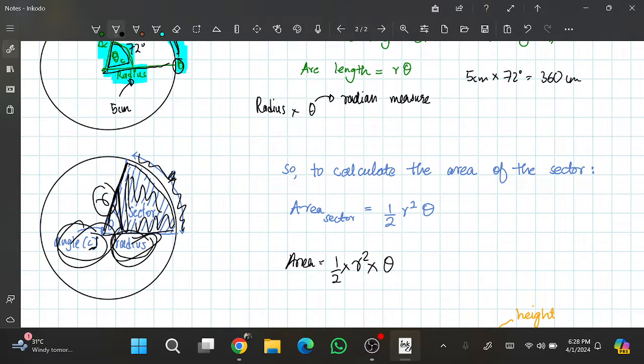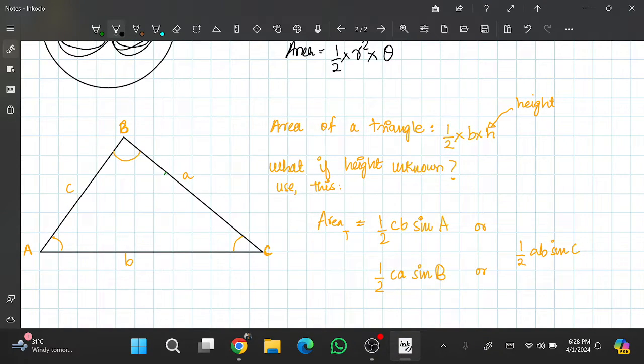Now this θ tells me that the angle is in radians and not degrees. Then the last thing: area of a triangle. Now of course when I ask you what's the area of a triangle, you told me 1/2 times base times height. That's because you've been given the height in that one. What if the height is not given? How will you calculate the area? Well we have a backup formula for that.